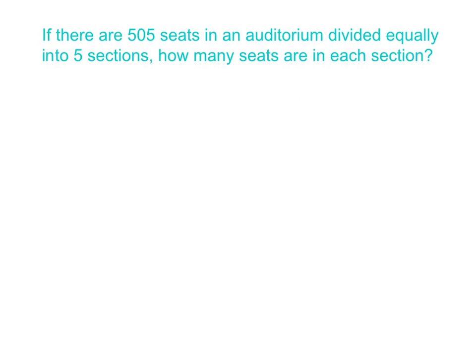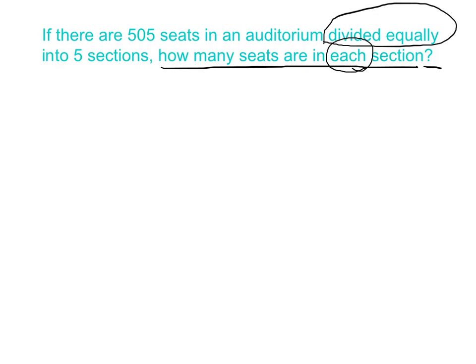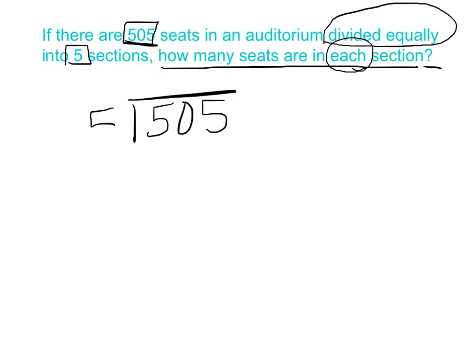Let's try this one. If there are 505 seats in an auditorium divided equally into 5 sections, how many seats are in each section? The first thing I'm going to do is underline that question: how many seats are in each section? I'm also going to look for keywords. I have 'each' in the question, which normally tells me I'm going to divide. And I have 'divided equally,' which are also two key words telling me to divide. I'm going to box my numbers and set up the division problem: 505 divided by 5.